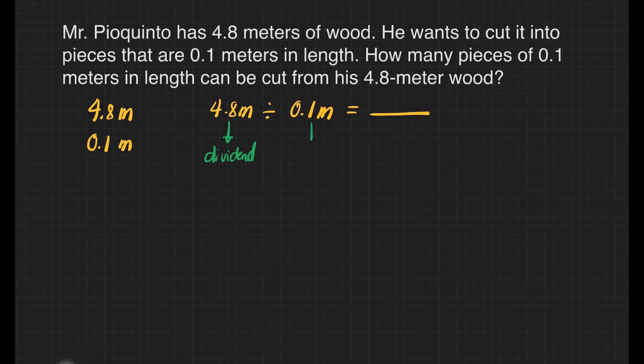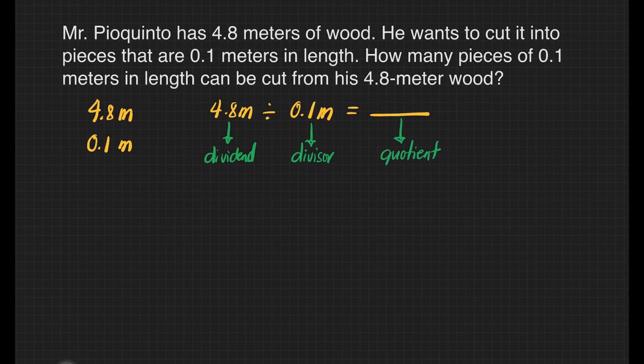Four and eight-tenths meters is our dividend. One-tenth meter is the divisor and the answer is the quotient. Before I will teach you the shortcut, we have to know first the long cut so that we know the reason behind our shortcut.